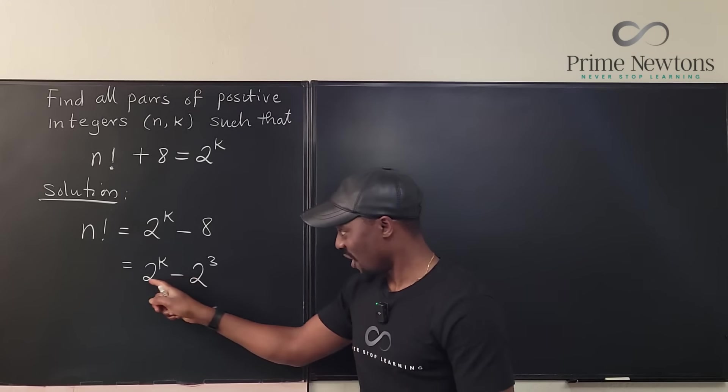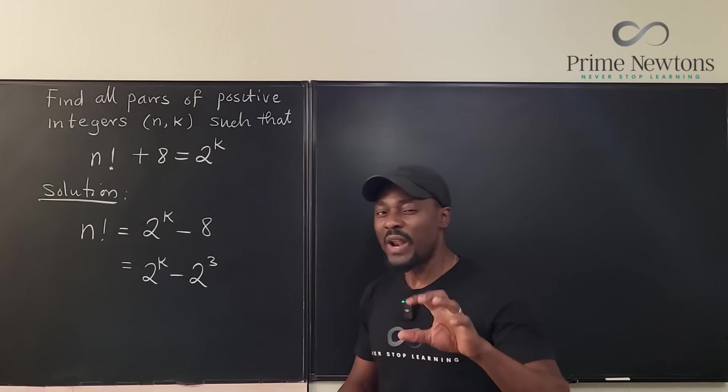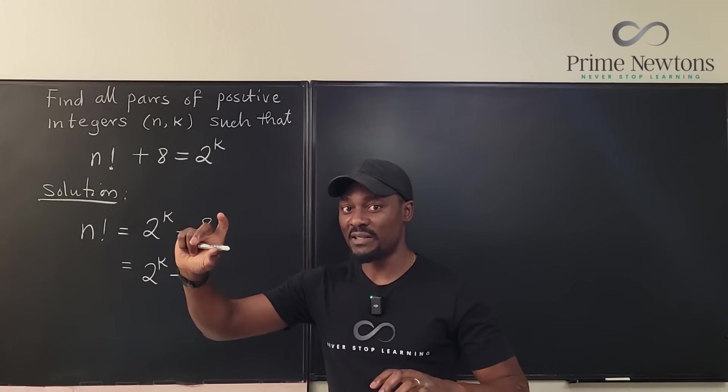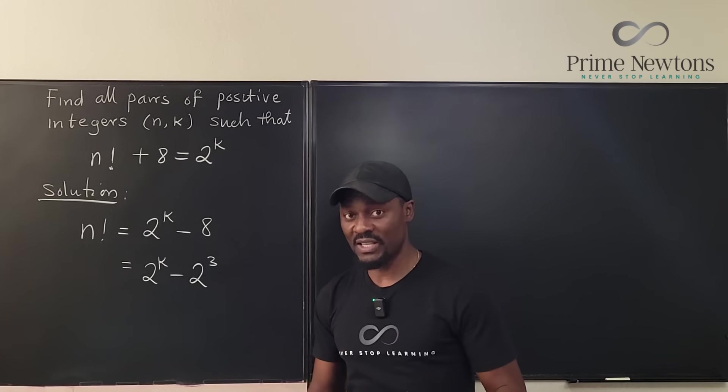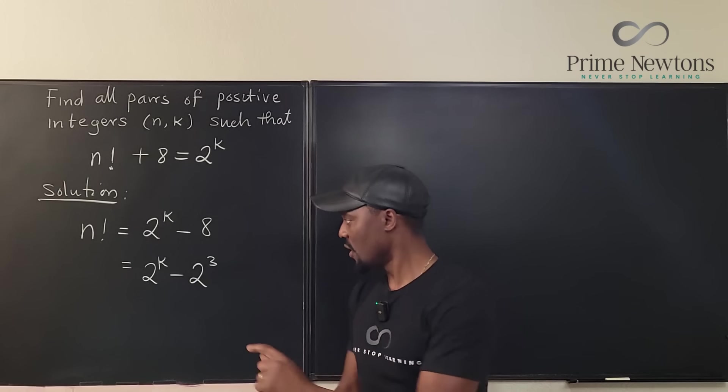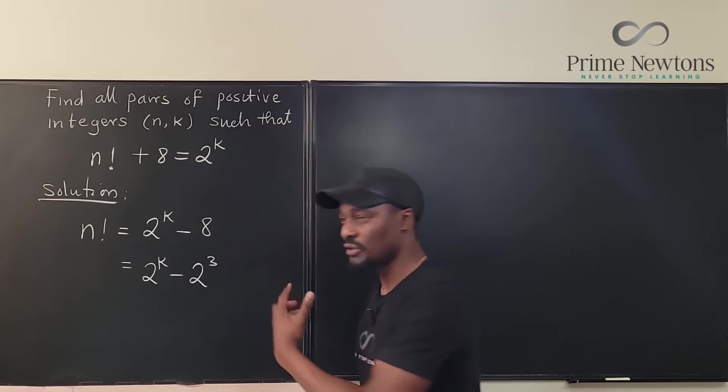Now there's a lot of similarity between this and this. Whenever you factor things with exponents, what I always tell my students is look at the one that is smaller. Which of these is the smaller version? Is k smaller than three or is three smaller than k? I don't know what k is.